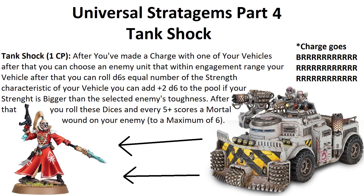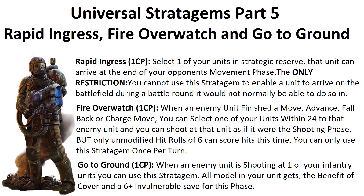Now the stratagems you can only use in your opponent's phase. Rapid Ingress, for one command point: at the end of your opponent's movement phase, select one unit from your strategic reserves or reinforcements and it can arrive to the battlefield as if it were your movement phase. However, the unit can only arrive in a turn it could have normally — it cannot arrive in your opponent's first turn.